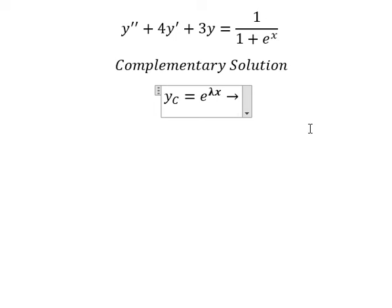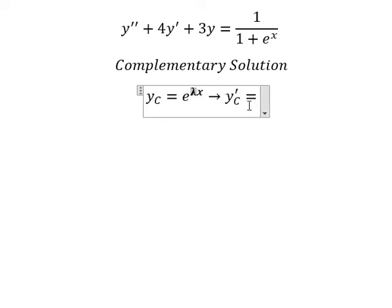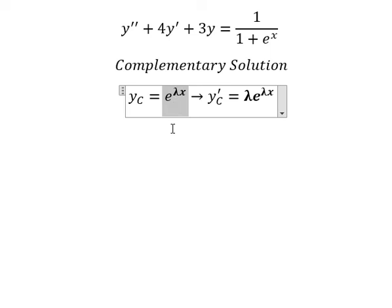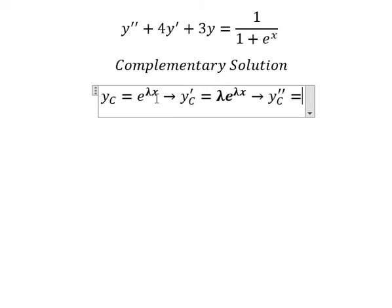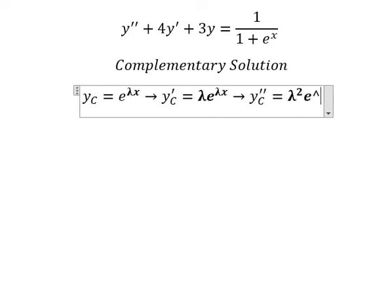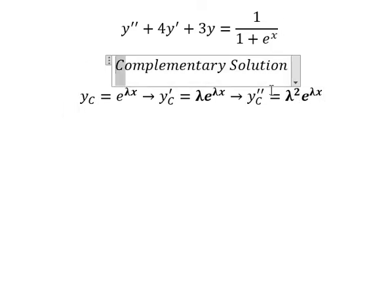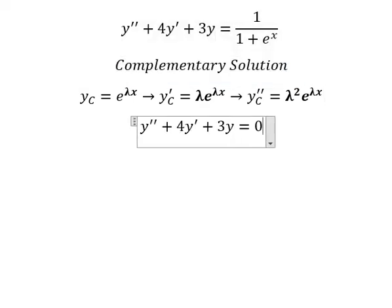We need to find the first derivative of yc. We have yc prime equals to lambda e to the power of lambda s, because we keep the same e to the power of lambda s and then do the first derivative of lambda s to get lambda. Now for the second derivative, we have lambda squared e to the power of lambda s.